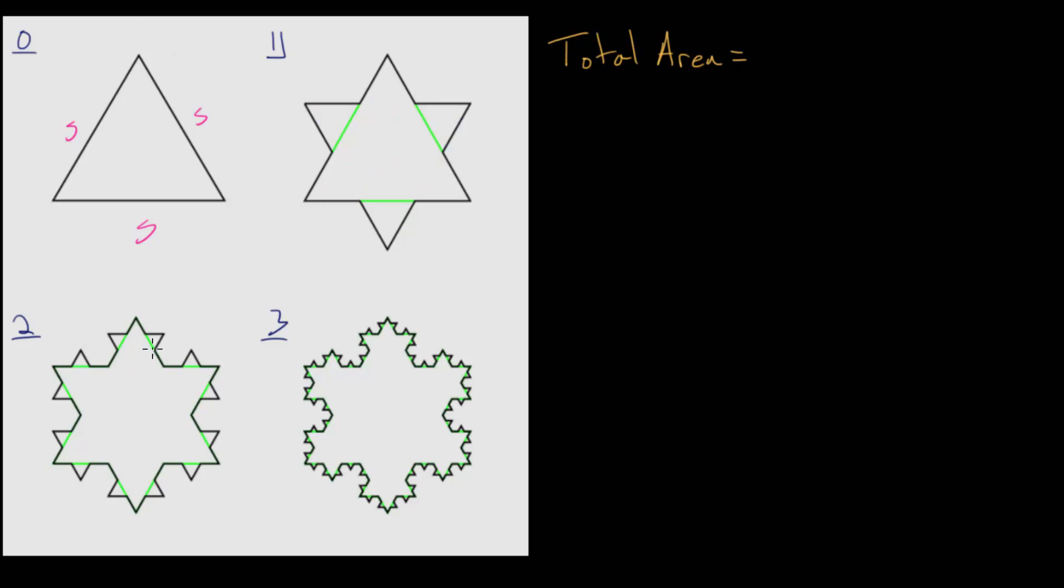And then when we get down to step 2, notice that we have everything from step 1, that's all of this that I'm coloring in in orange. But then we're adding in new triangles that you can see here.